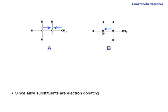Since alkyl substituents are electron donating, carbocation A is more stable than carbocation B.